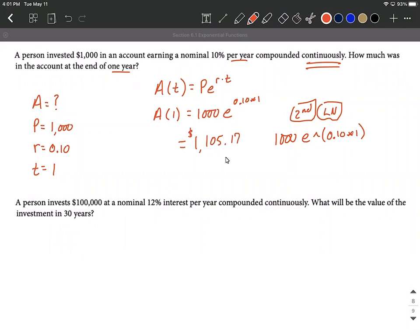But then get that all in our calculator and this should equal $1,105.17. Round it to the nearest decimal place. Alright. What about, we've got two more quick examples here.